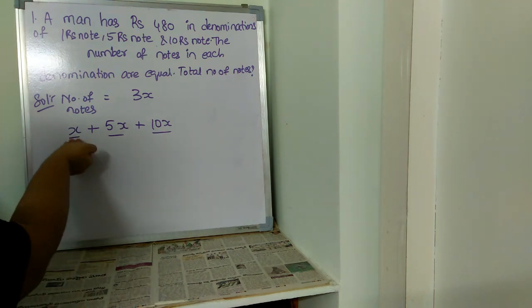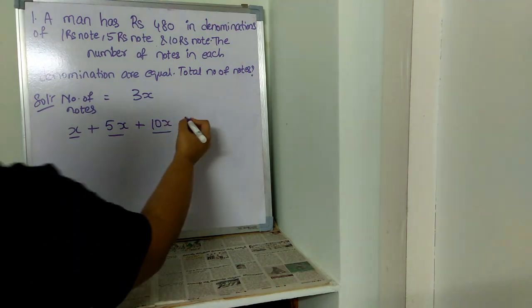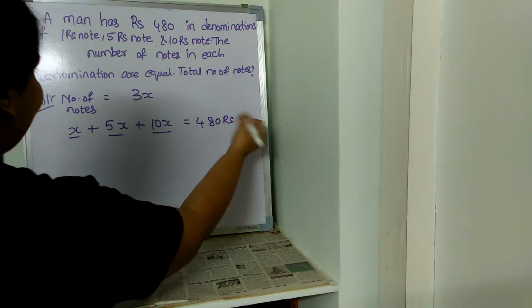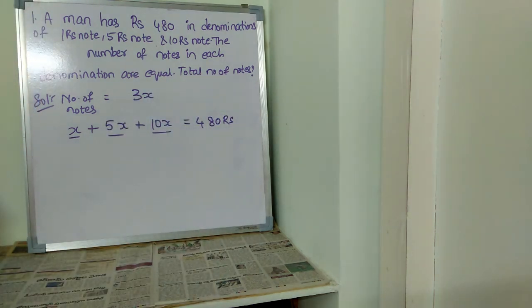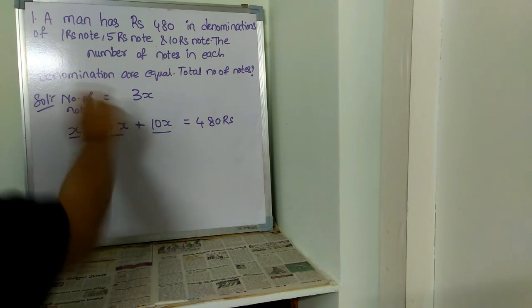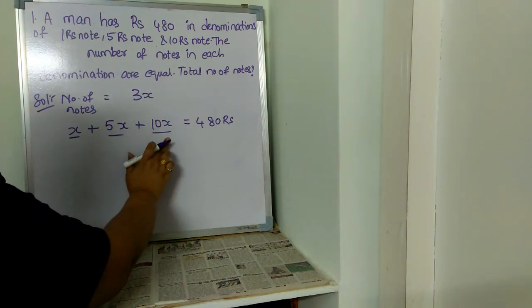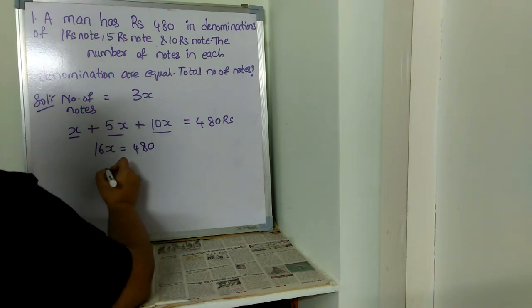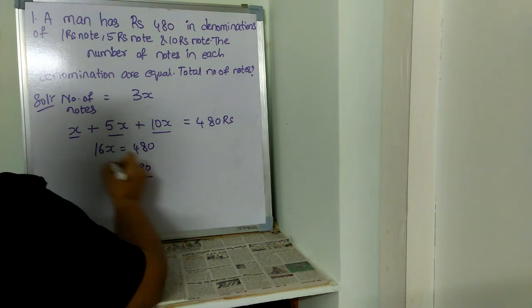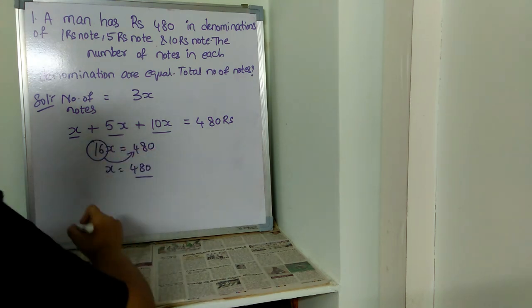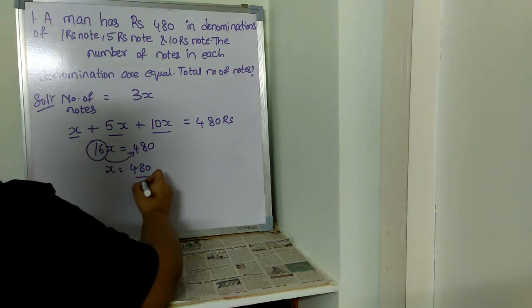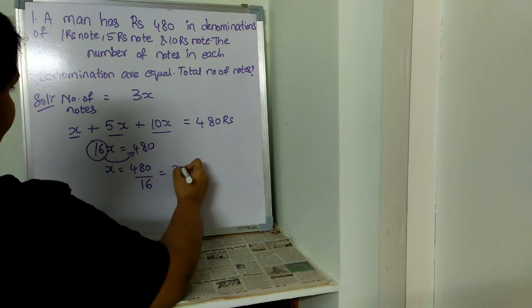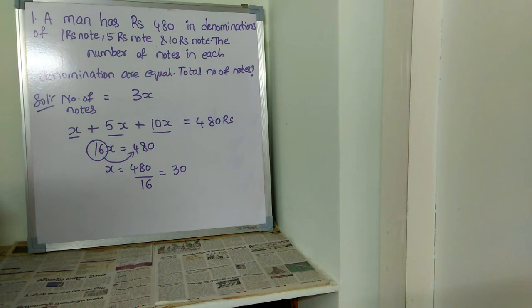When the man combines all the one rupee, five rupee, and ten rupee notes, he has 480 rupees. So we solve: x + 5x + 10x = 480. That gives us 16x = 480. When 16 goes to the right-hand side, multiplication becomes division, so x = 480 ÷ 16 = 30. So x is equal to 30.